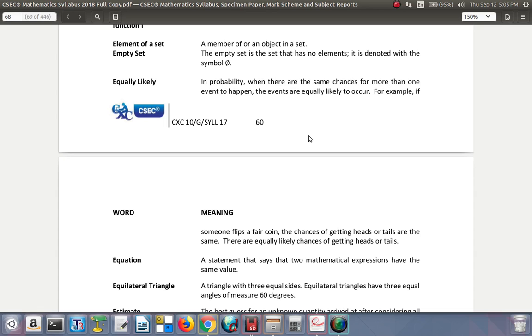Equally likely. In probability, when there are the same chances for more than one event to happen, the events are equally likely to occur. For example, if someone flips a fair coin, the chances of getting head or tail are the same.